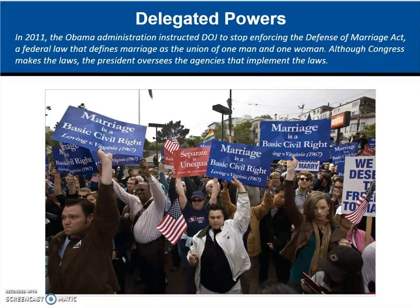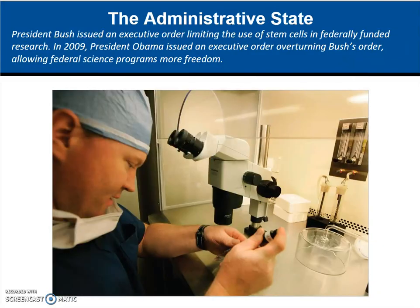President Bush issued an executive order that stopped the use of stem cells in many cases, limiting federally funded research to only a few existing strands. As we've discussed, executive orders can be passed without Congress, but the next president can easily undo them. When President Obama took office in 2009, he issued his own executive order overturning Bush's — and neither one needed to use Congress. All right, we will see you in class.